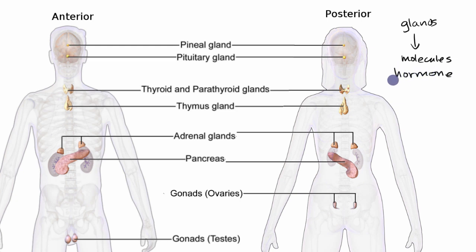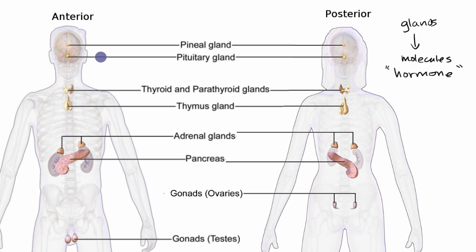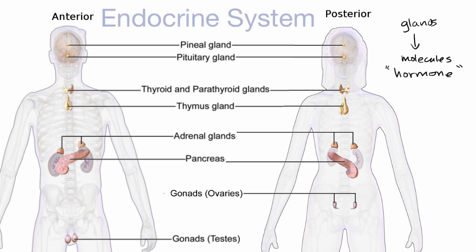The word hormone comes from the Greek 'hormo,' which means to set in motion. So one way to think about it: these are molecules that set things in motion in other parts of the body, to regulate body function. This entire system of glands is referred to as the endocrine system.